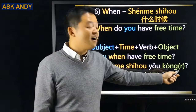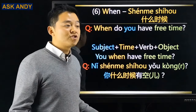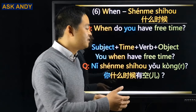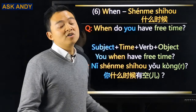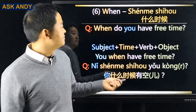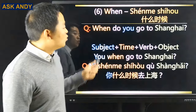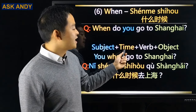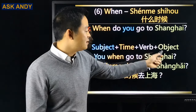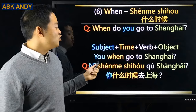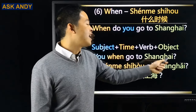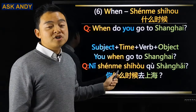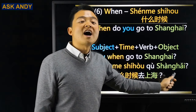The (r) in 空儿 is optional — you'll hear it in northern China, but southern China goes without it. 'When do you go to Shanghai?' Same pattern: you / when / go to Shanghai → 你什么时候去上海?